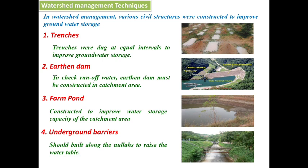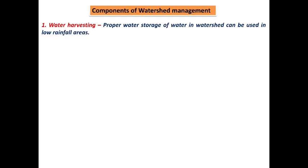The fourth watershed management technique is underground barriers. Underground barriers should be built along the nullahs to raise the water table. It is a concrete structure that directs the passage of water to settle in a nearby reservoir, lake, stream, or river. These four techniques are the watershed management techniques.